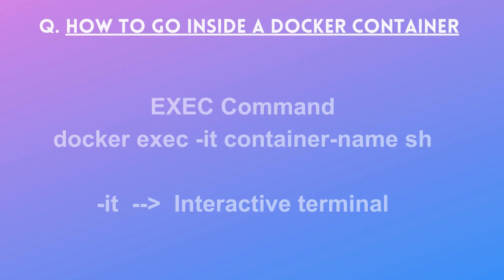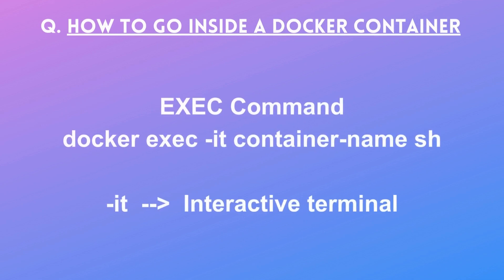A commonly asked Docker question is: when a container is up and running, how do you go inside it to run commands or check logs? For that, you use the `docker exec` command. The full command is `docker exec -it <container_name> sh`. The `-it` flag means interactive terminal — it opens a terminal through which you can access the container. You can write `sh` for shell or `bash` for a bash terminal.